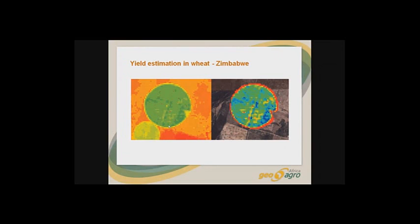The basic concept is that you have the NDVI on one hand. You take measurements the first one or two years because you need to find that correlation. Once that correlation is established, then you can do this process for the same region, for the same type of crop, without going so much to the field — just do a field check maybe.